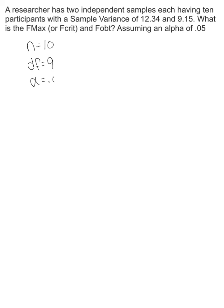Our alpha level is .05. We know the larger sample variance is 12.34 — not the larger sample size, since both are equal, but the larger sample variance. The smaller sample variance is 9.15. So let's find our F-max or F-crit. Using the F-max table with degrees of freedom = 9 and K = 2 for two groups, we get an F-max of 4.03.